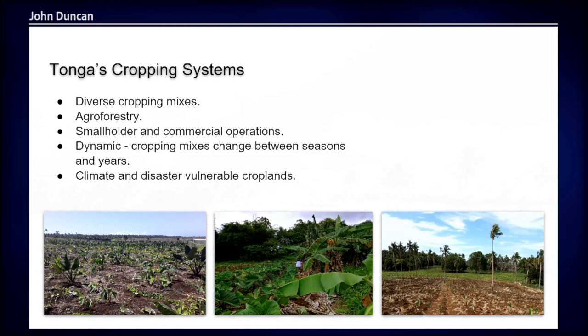The overriding characteristic was just the sheer diversity of cropping. Within a single field, you'll have a huge mix of crops — fruit crops, tree crops, vegetables, root crops — and the patterning of crops is very varied, with a mix of intercropping systems and agroforestry systems. Between farms, there's also quite a bit of variety in what crops are growing, depending on livelihood strategies and the time people can allocate to cultivation. Between islands, there are also varieties in cropping systems.